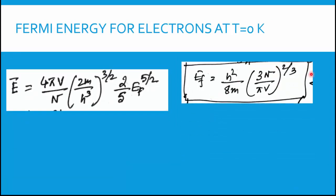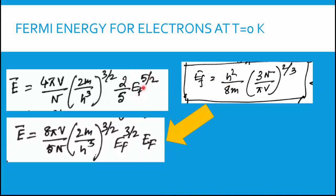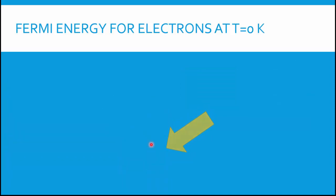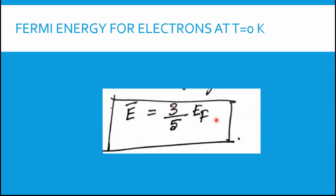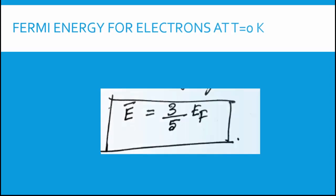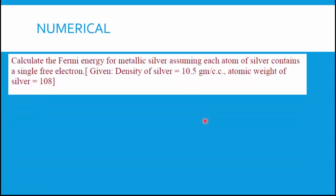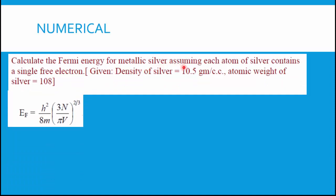Using the previously derived relation for N vs E_F, I break E_F^(5/2) as E_F^(3/2) · E_F and substitute the expression for E_F^(3/2) in terms of N. All other terms cancel, leaving the final result: Ē = (3/5) · E_F. This is the relation between mean internal energy and Fermi energy.